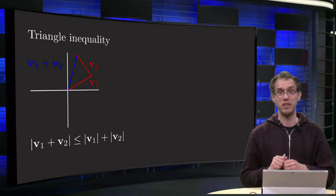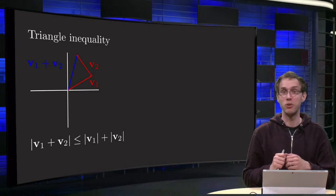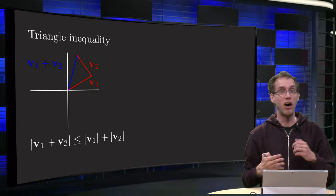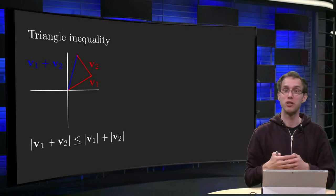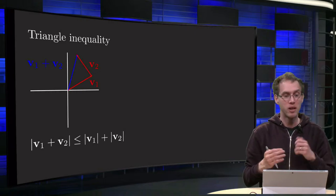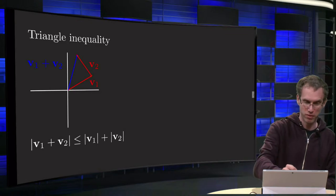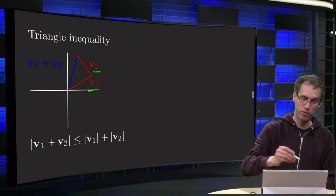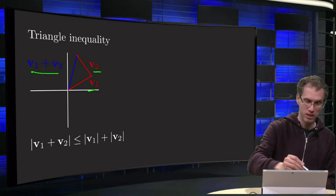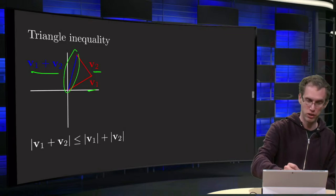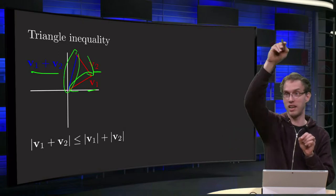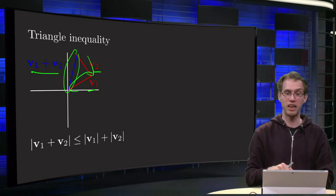You all know the triangle inequality. It basically states that you go faster from A to B in a straight line. That seems pretty obvious. However, this triangle inequality turns out to be really useful in the context of complex numbers, as you will learn in this video. We have here vectors v1 and v2, and the sum of the two v1 plus v2. The triangle inequality says that this distance over here is smaller than the sum of that one and that one — so going in a straight line is faster than going like this and like that.